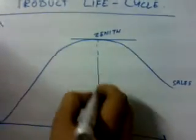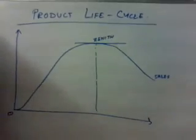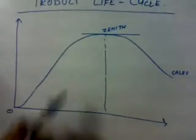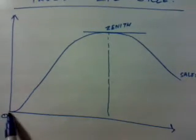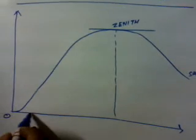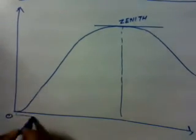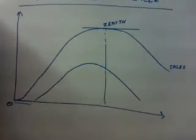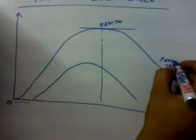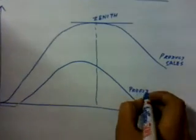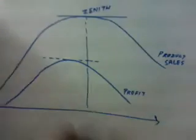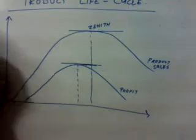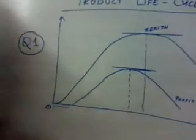This happens with every product. Consequently, along with the sales line, the company starts generating profit derived from the sales — but not from when the product was actually introduced. Profit generally starts generating after a few units of sales. Profit increases and declines just like the sales line — the profit line also reaches the zenith and falls down.